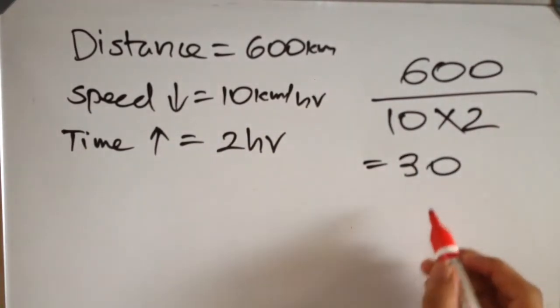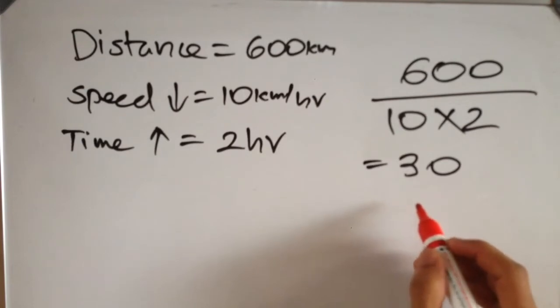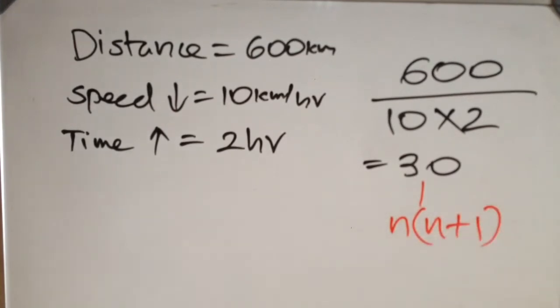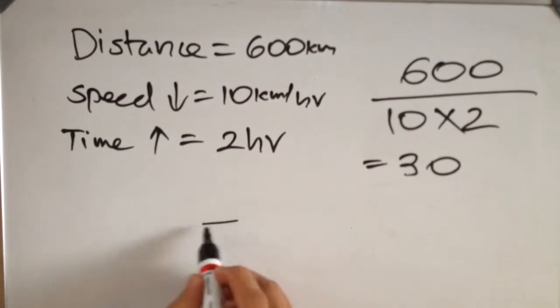Now we have to express this number as a product of two consecutive numbers. We have to express this in N into N plus 1 format. So we have 30 is equal to 5 into 6.